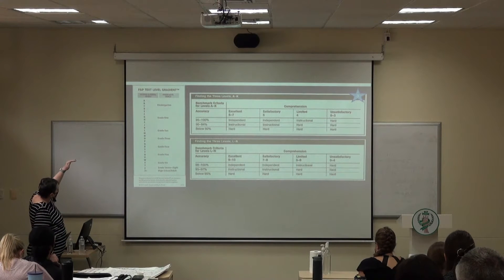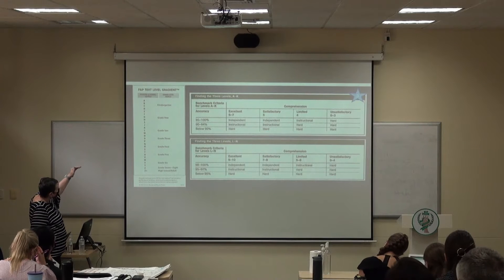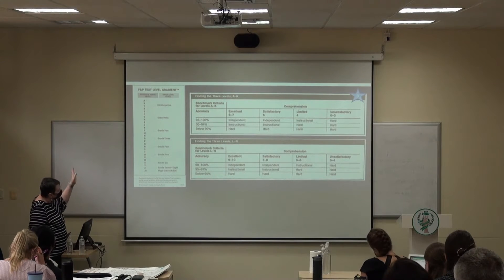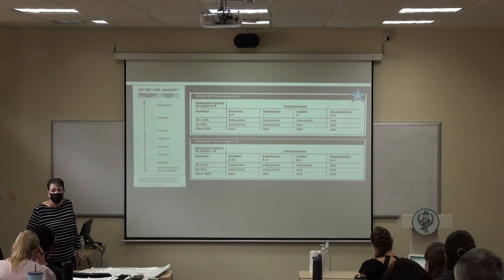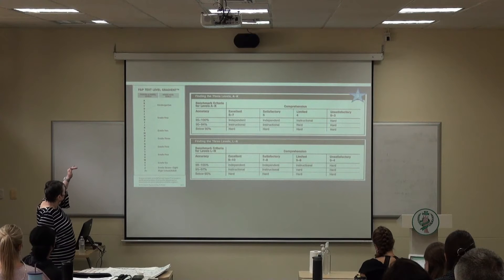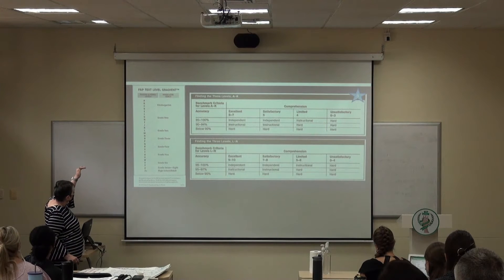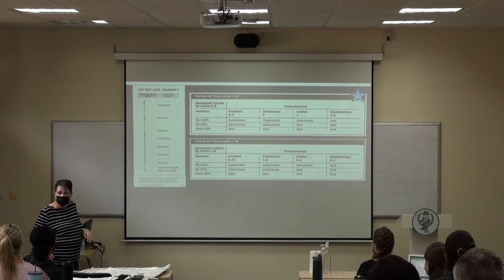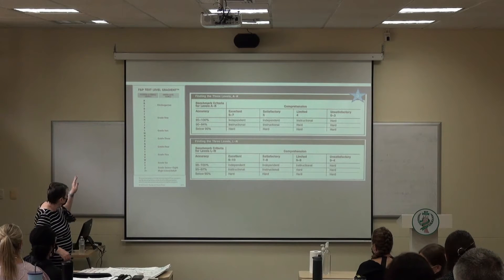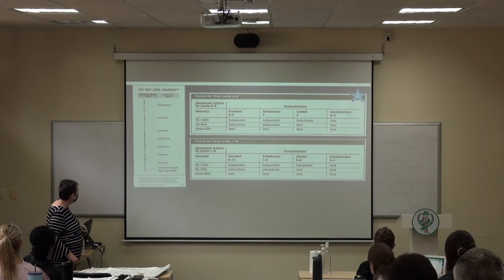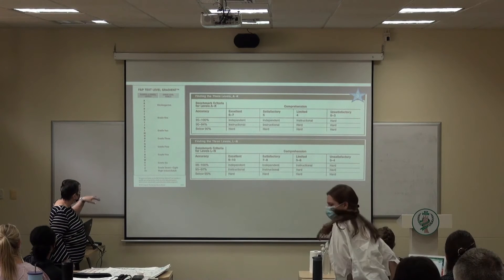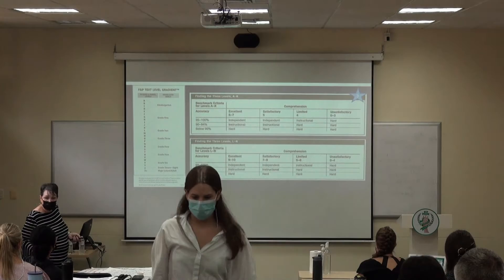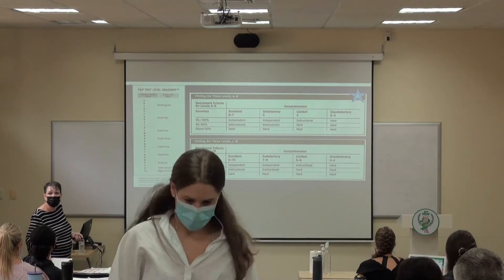So if you think about kindergarten, we start at A, and by the end of the year we want them to be at maybe D or E. For grade one, we start at E and then go to J. You can see how it falls — by fifth grade, you're pretty high in the alphabet.